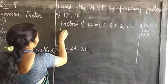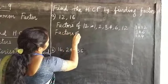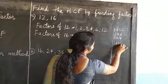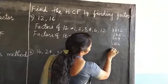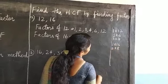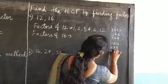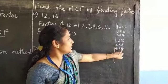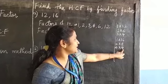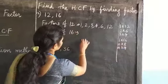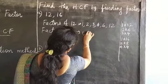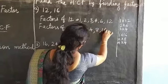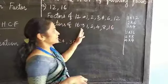Next, we are going to find the factors of 16. The factors are 1, 2, 4, 8 and 16. These are the factors of 16.